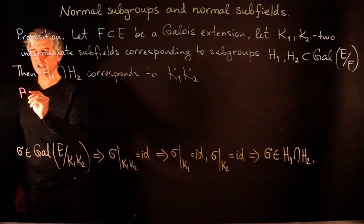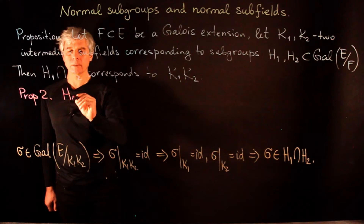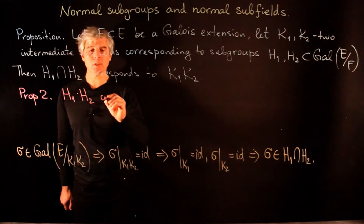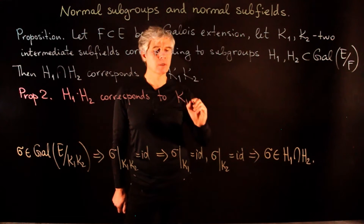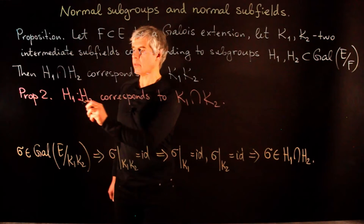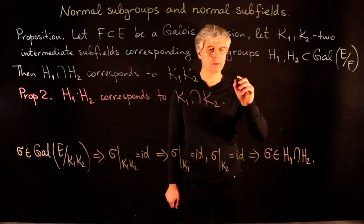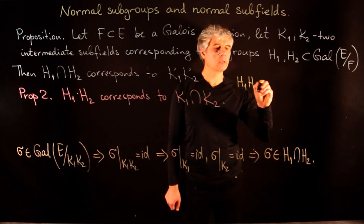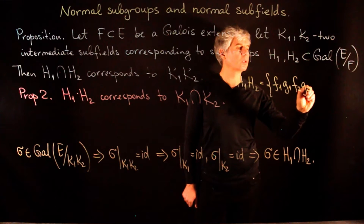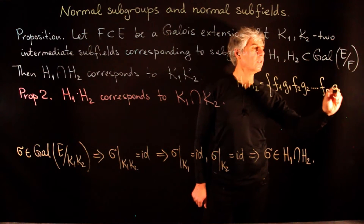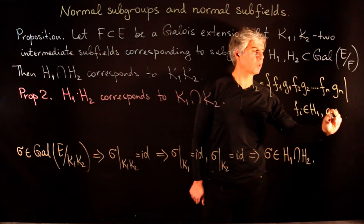The second proposition says that in the same setting, the product of two subgroups H1·H2 corresponds to the intersection of the subfields. The product H1·H2 is the smallest subgroup containing both H1 and H2, consisting of elements f1·g1·f2·g2·...·fn·gn where the fi's belong to H1 and the gi's belong to H2.